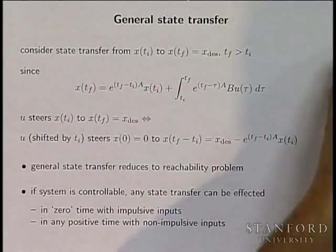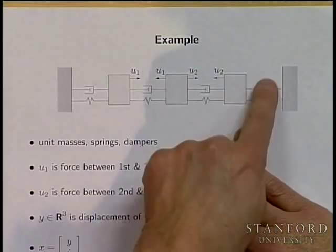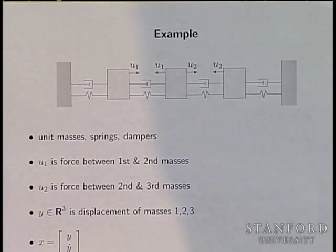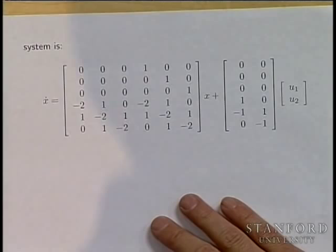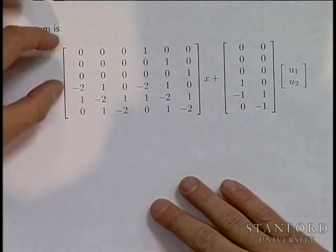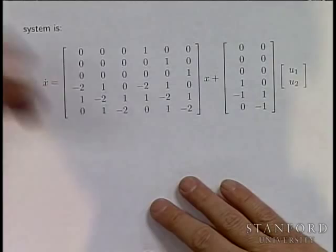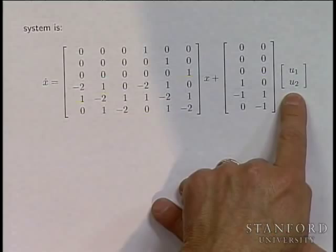Here's an example: three masses stuck between two walls, with springs and dampers, and two applied tensions. We've seen this example before. The state is six-dimensional — the displacements and velocities of the three masses. The system matrix has a clear block structure: position-dot equals velocity by definition, and the other blocks come from stiffness, damping, and how the two tensions apply forces to the different masses.